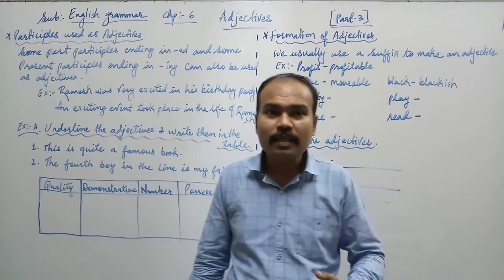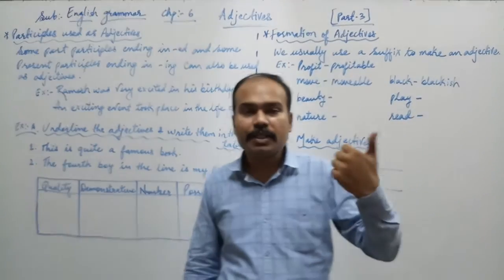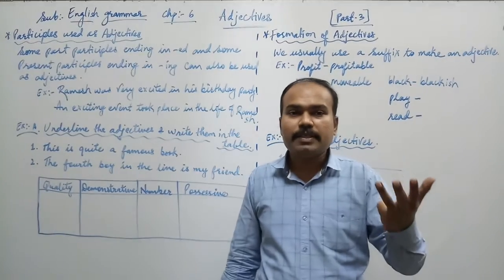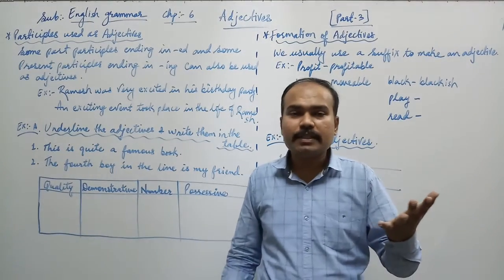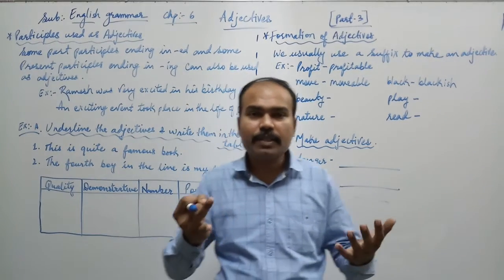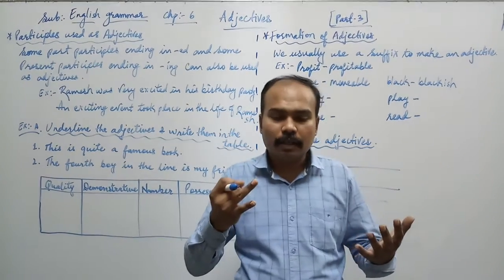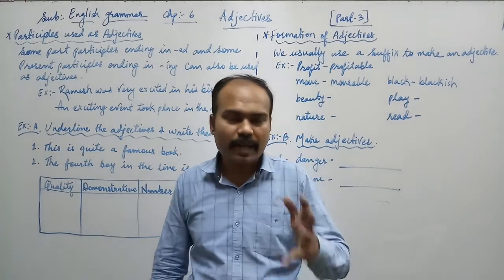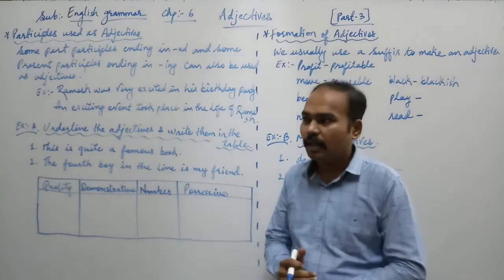Let us revise. They were Adjective of Quality, Adjective of Quantity, Number, Demonstrative Adjective, Distributive Adjective, Interrogative Adjective, Possessive Adjective and Indefinite Adjective. These were the 8 main kinds of adjectives which we have seen earlier.